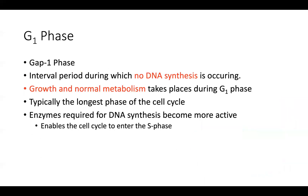During G1 phase — the first gap phase — this is the interval period during which no DNA synthesis is occurring. Basically what's happening here is normal growth and metabolism. The cell is preparing for growth, taking in nutrients. This is typically the longest phase of the cell cycle. Molecules have been synthesized, and enzymes required for DNA synthesis are becoming active — basically preparing the cell to enter S phase.